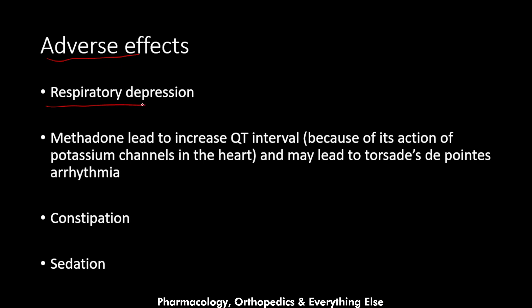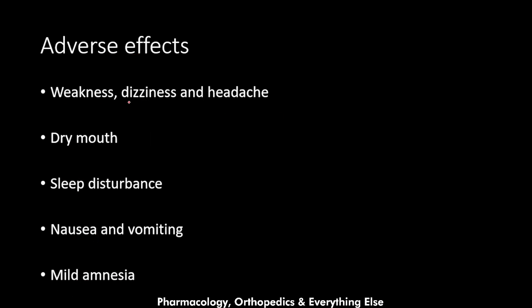Methadone leads to respiratory depression due to inhibition of the respiratory center. It also increases the QT interval because of its action on the potassium channels in the heart, which may lead to torsades de pointes arrhythmia. Additional adverse effects include constipation, sedation, weakness, dizziness, headache, dry mouth, sleep disturbance, and nausea and vomiting.